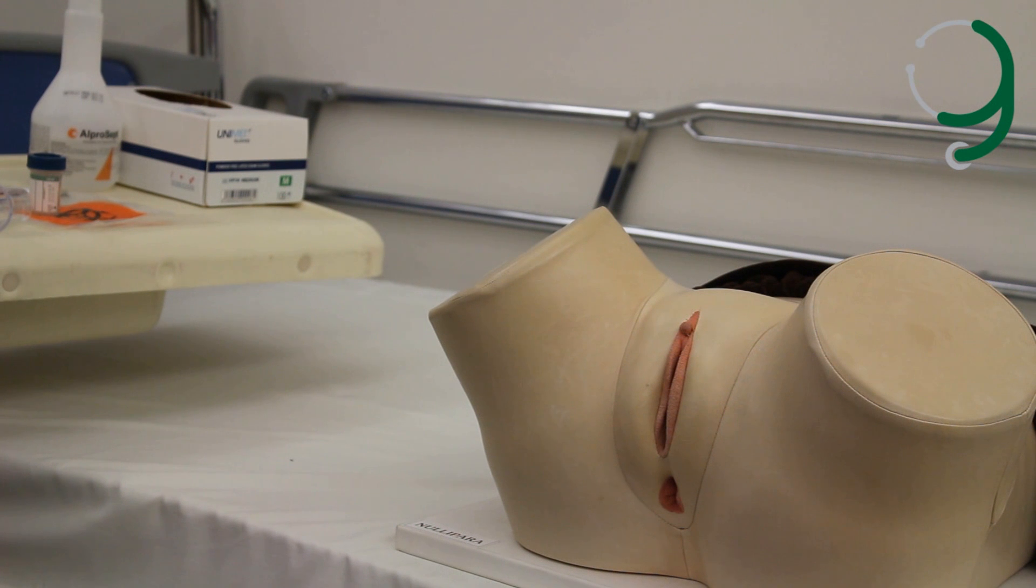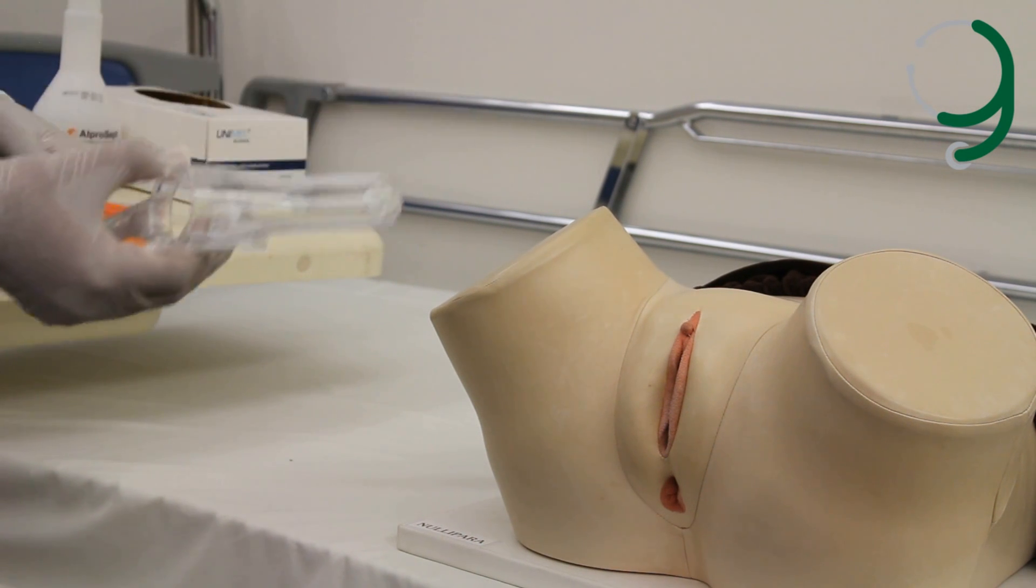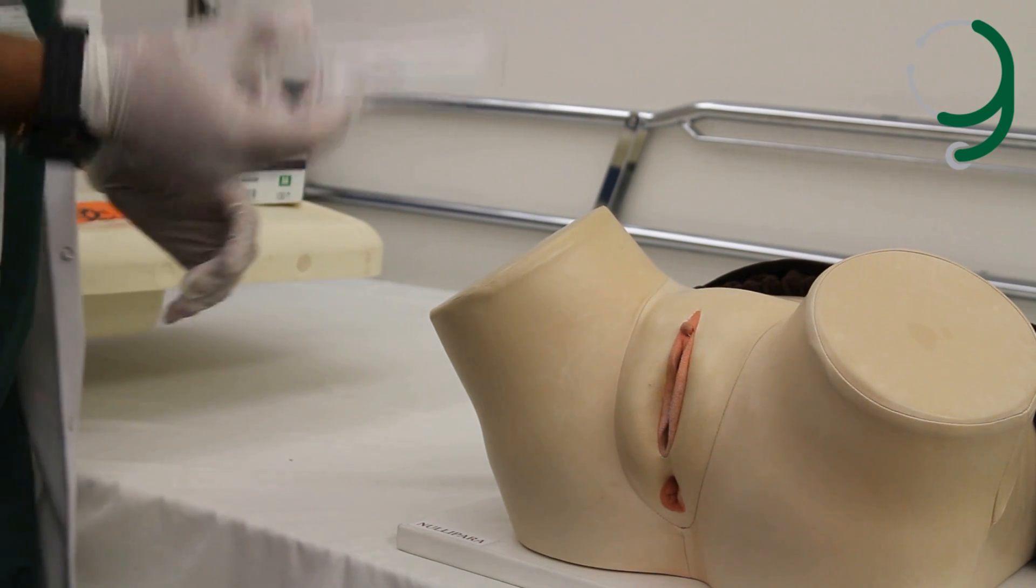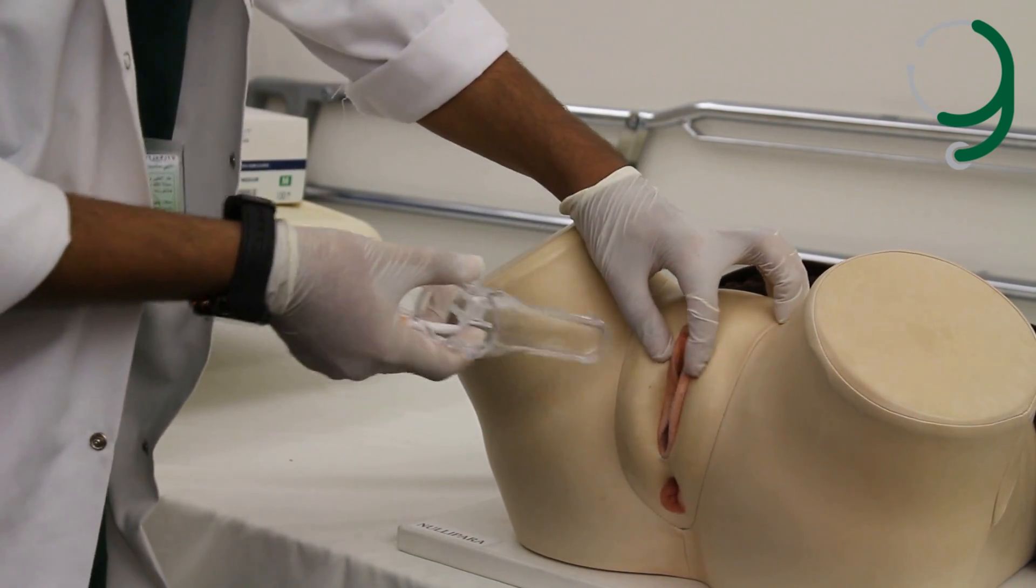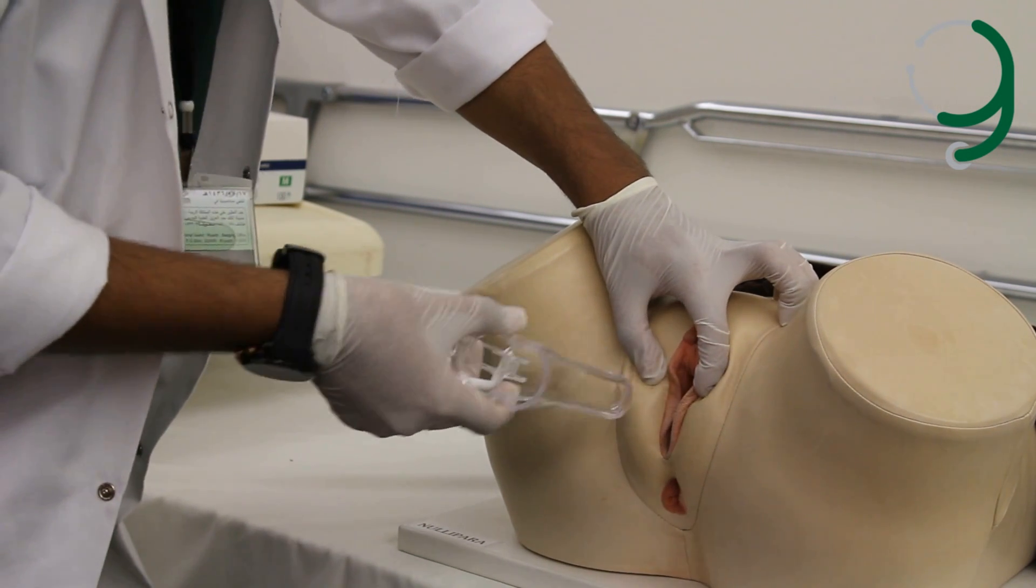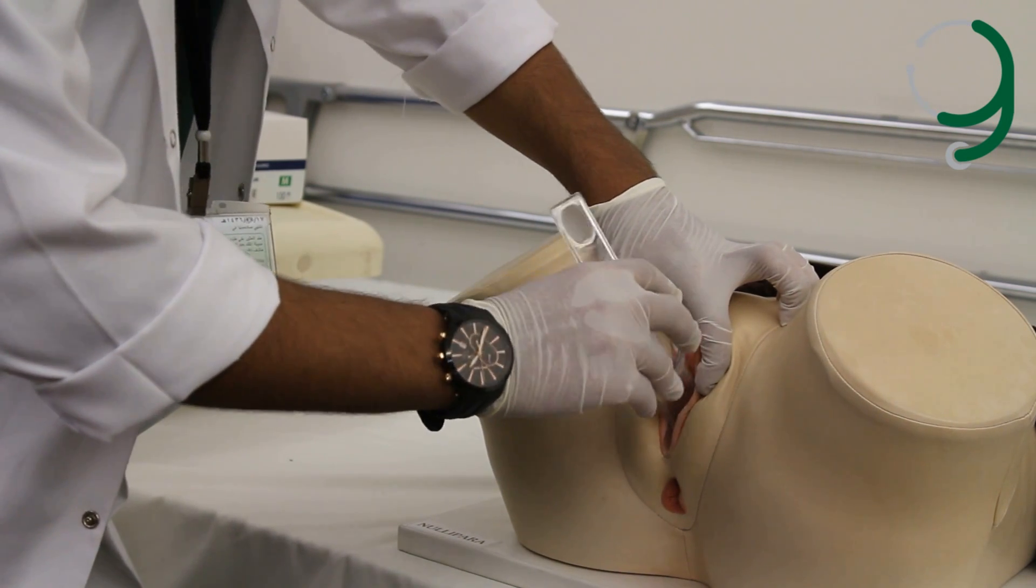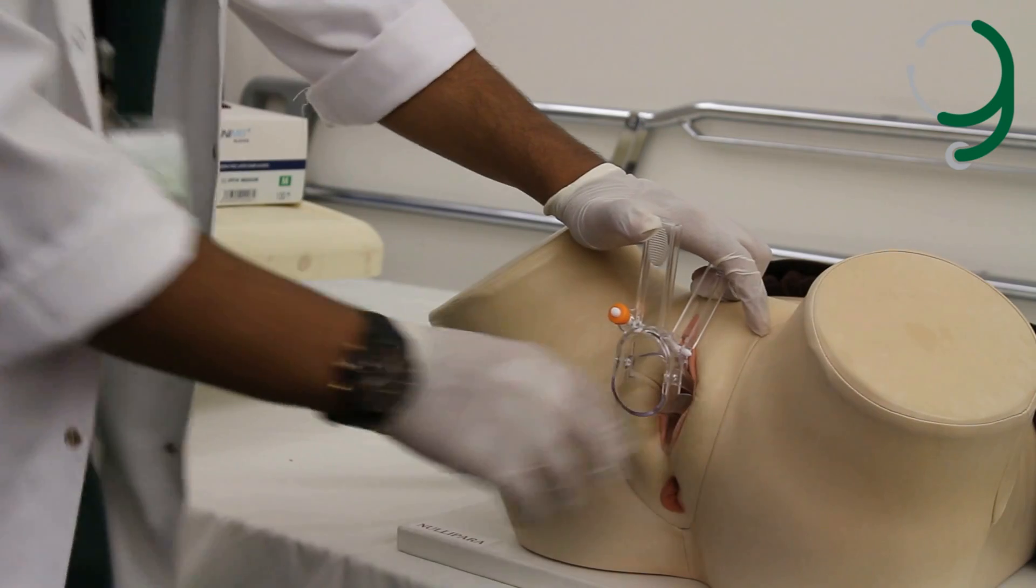Next step in the vaginal examination is the speculum and Pap smear. First of all, this is the speculum. You lubricate the tip with gel before inserting it. You tell the patient that she might feel a little bit of discomfort while inserting it. After you put the lubricant, you insert it horizontally, like so. Spread the labia so the labia is open, and insert the blade. While inserting it, you rotate it so that it's vertical when it's fully inserted.